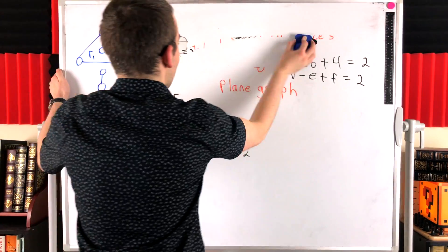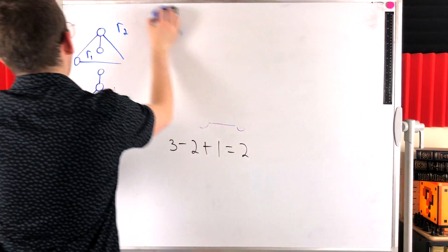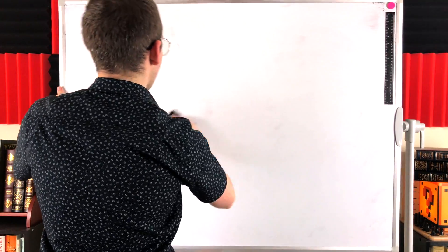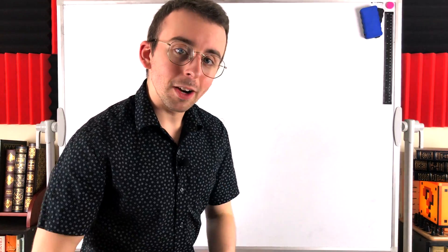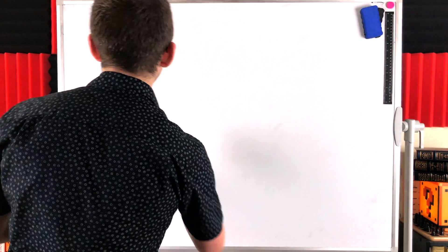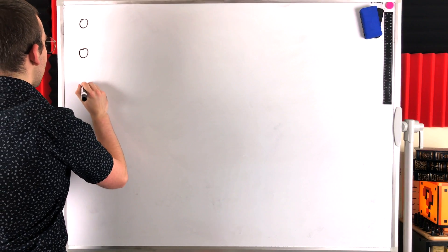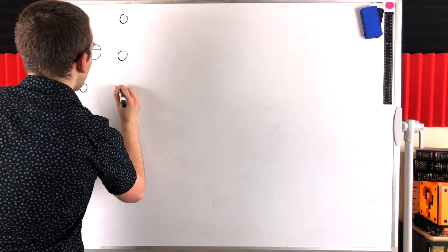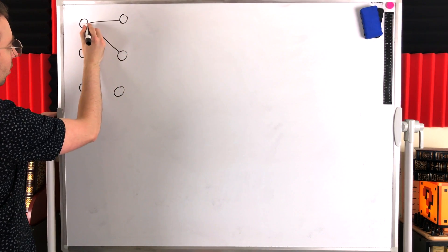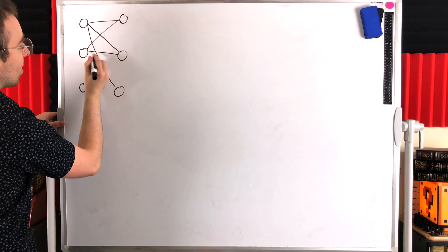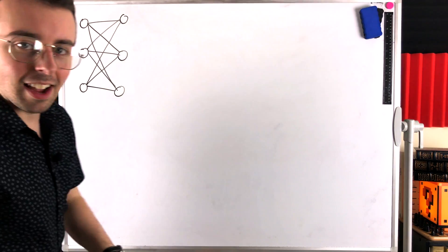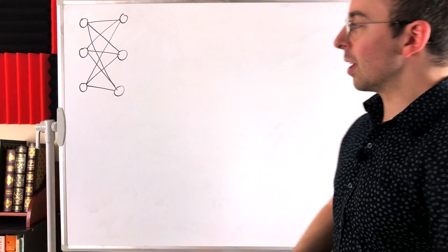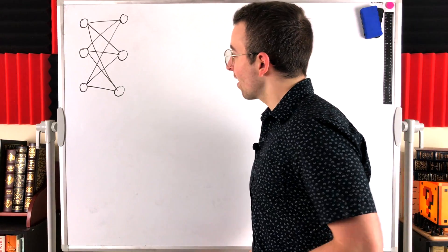A planar graph is a graph that can be drawn in the plane with no edge crossings. A non-planar graph is a graph that cannot be drawn in the plane with no edge crossings — no matter how you draw it, there are always some edges that have to cross. The most famous example of a non-planar graph is K3,3, the complete bipartite graph with partite sets of cardinality three and three. This bipartite graph has all vertices in one partite set adjacent to all vertices in the other. At a glance you might think there's no way to draw this without edge crossings.